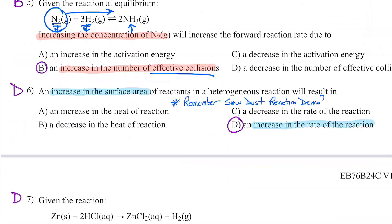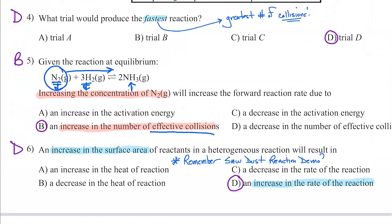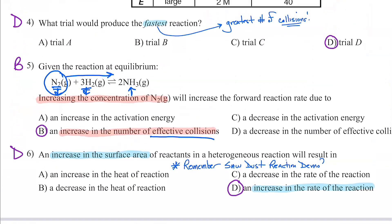Number six: an increase in surface area of the reactants in a heterogeneous reaction. Heterogeneous means you have solids and possibly liquids or gas — different phases. Remember the sawdust demo? I burned some sawdust in a pile and it went pretty slow, but when I blew it over a flame, the rate of reaction increased greatly — it's a surface area demo. Increasing surface area exposes more atoms to collisions with oxygen. It's combustion, and therefore D is the answer.